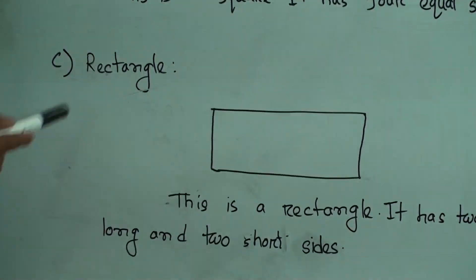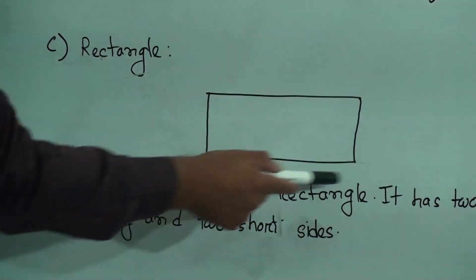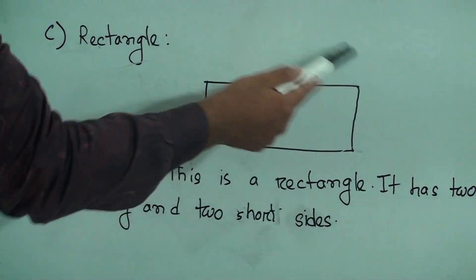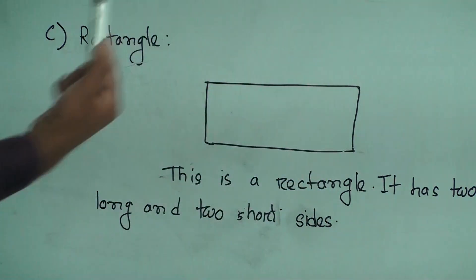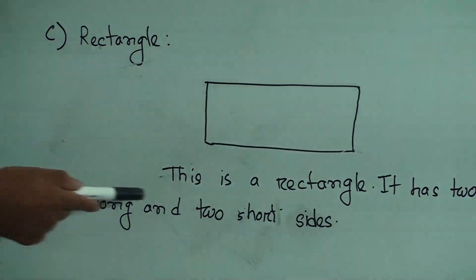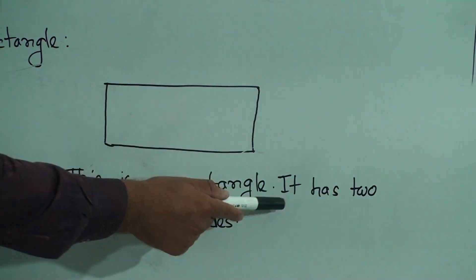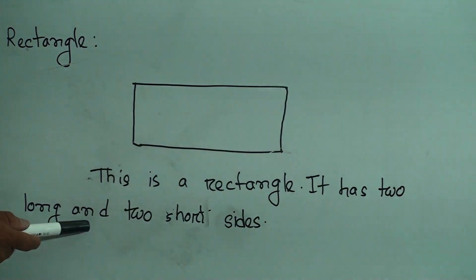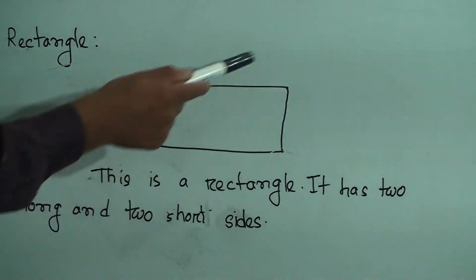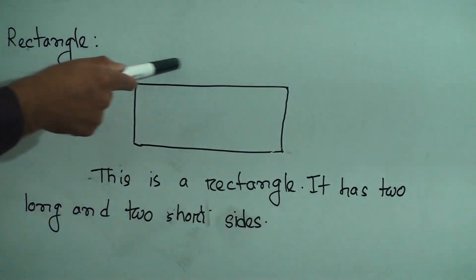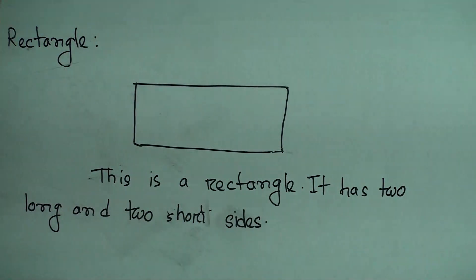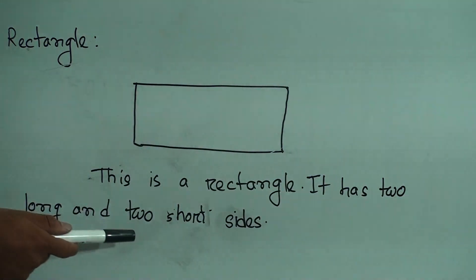Now rectangle. Look, this shape is called a rectangle. It has two long and two short sides. Look, this is long and this is short. So it has two long and two short sides.